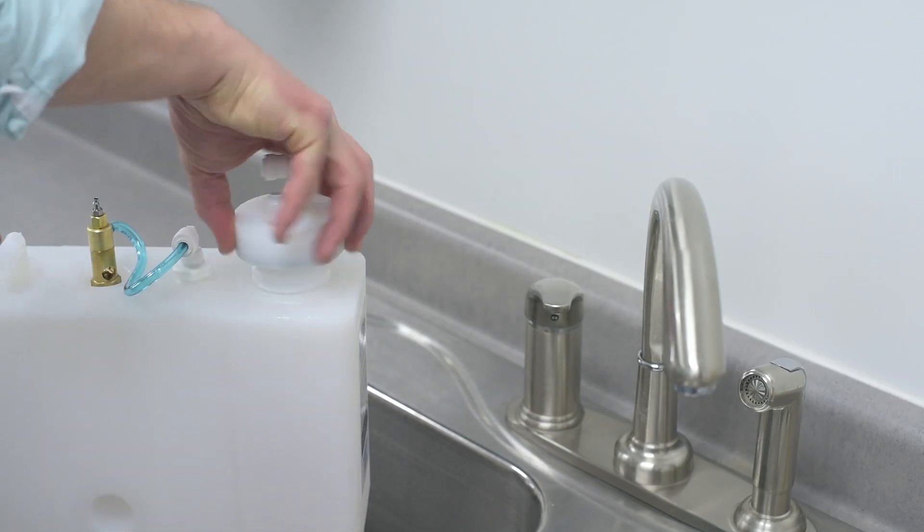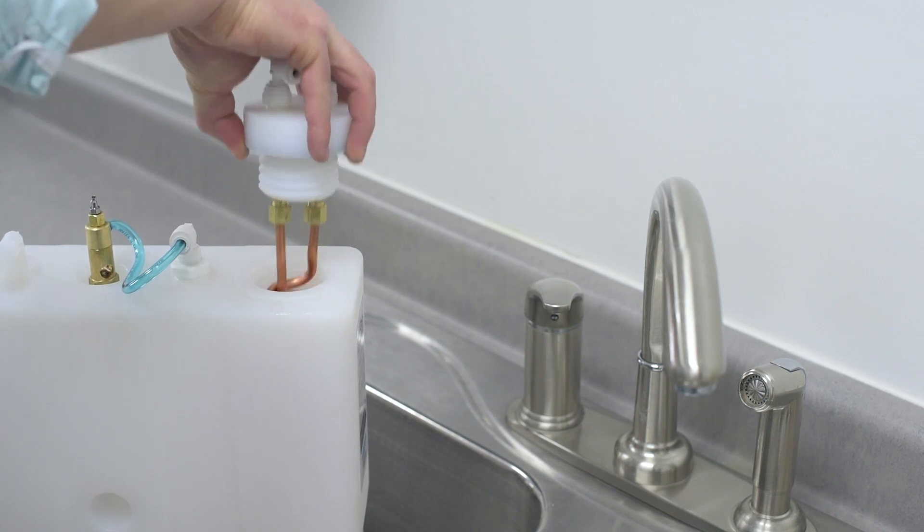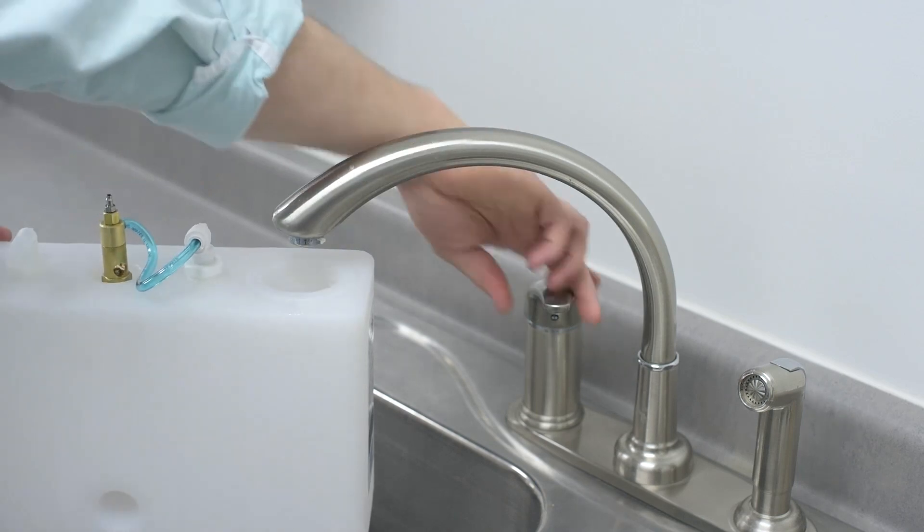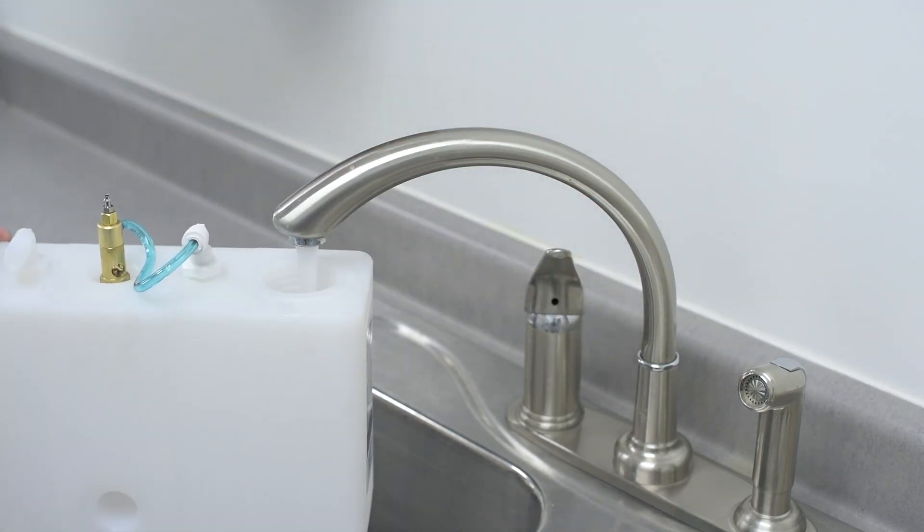Start by filling the water tank completely. Remove the manifold and coil assembly from the tank by twisting the manifold counterclockwise. Fill the tank with cold water, replace the coil manifold, and place the tank into position under the sink.